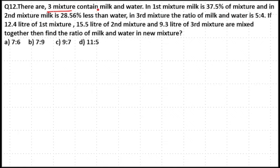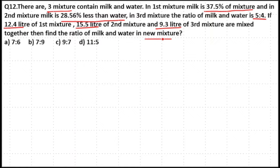There are three mixtures containing milk and water. In the first mixture, milk is 37.5% of the mixture. In the second mixture, milk is 28.56% less than water. In the third mixture, the ratio of milk to water is 5 to 4. If 12.4 litres of the first mixture, 15.5 litres of the second mixture, and 9.3 litres of the third mixture are mixed together, find the ratio of milk and water in the new mixture.